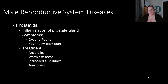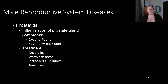Preventative measures for prostatitis include maintaining good water intake so urine is constantly processed, watching for and treating UTIs early, and practicing good hygiene — especially for uncircumcised males, as bacteria can develop in the folds of the foreskin and increase the risk of UTIs.